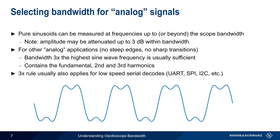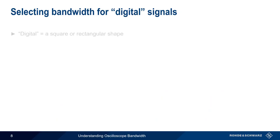This 3x rule also usually applies when decoding serial data signals, like UART, SPI, I2C, etc. Although these protocols use square waves, the data rate is typically low enough that rounding of the corners will not affect the scope's ability to properly decode these signals.